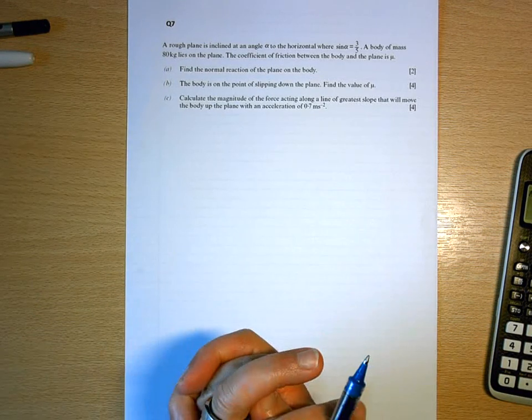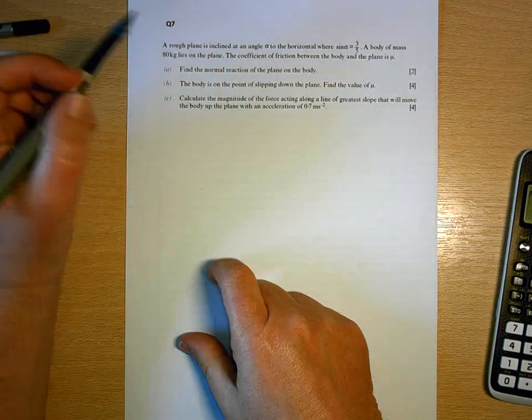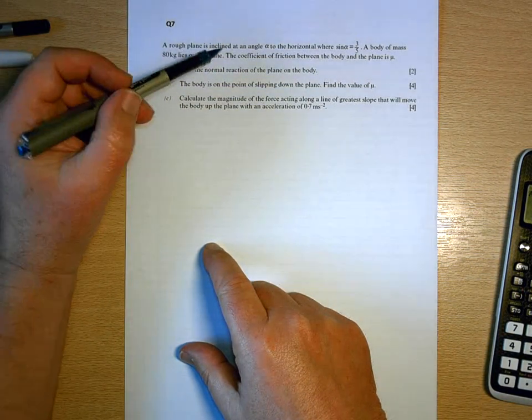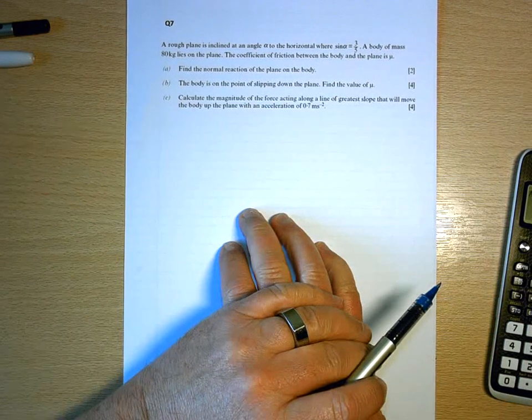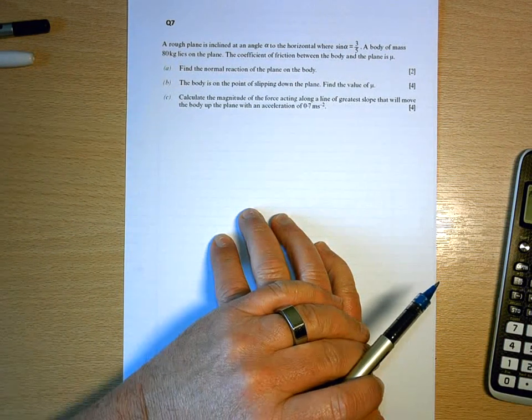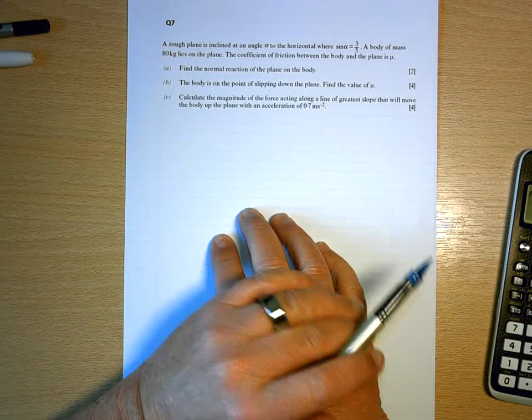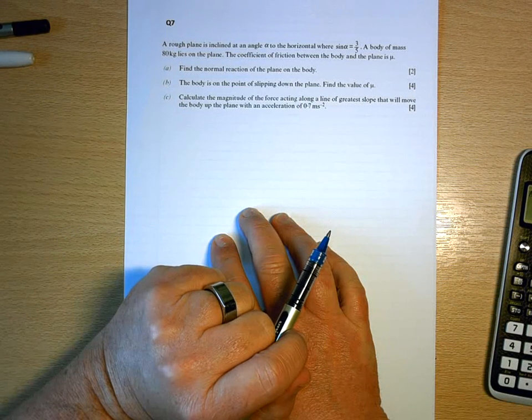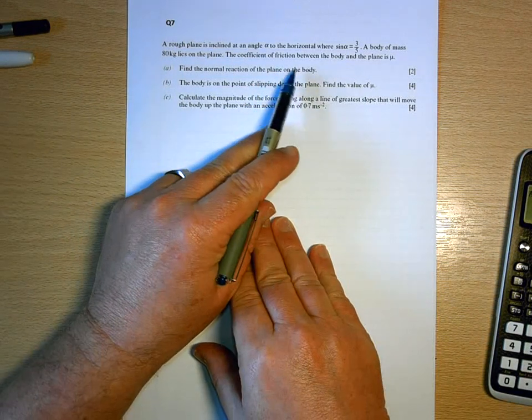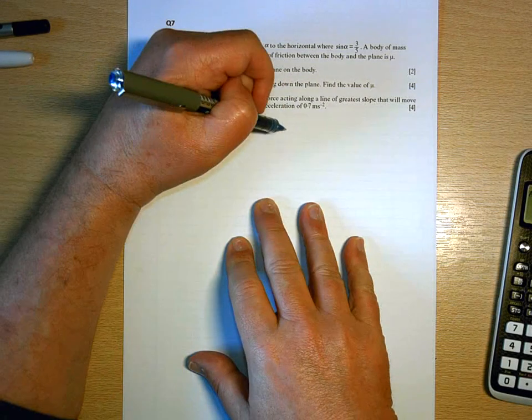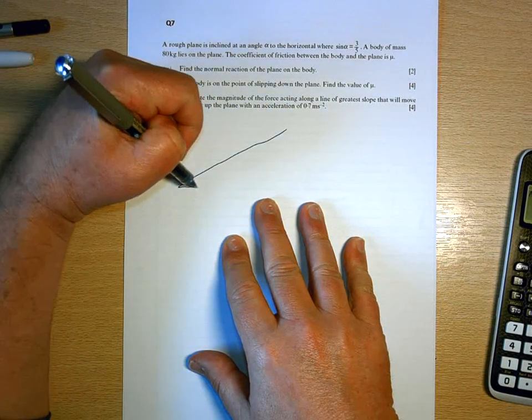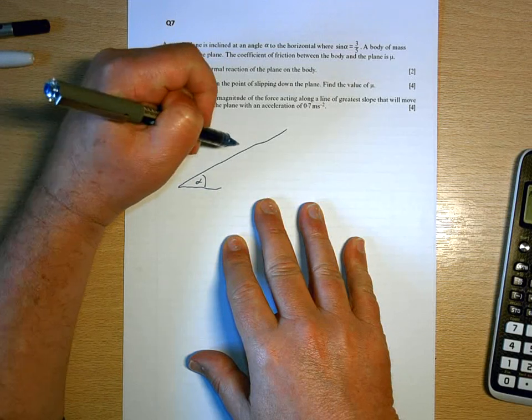Right, the final question: the dreaded inclined plane. A rough plane is inclined at an angle of alpha to the horizontal, and they're giving us the fraction relationship for alpha. A body of mass 80 kilograms lies on the plane. The coefficient of friction between the body and the plane is mu.